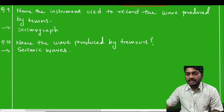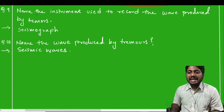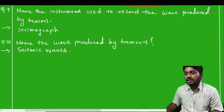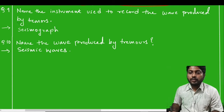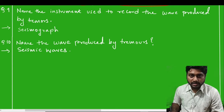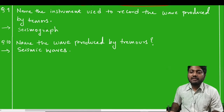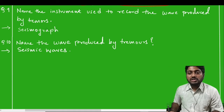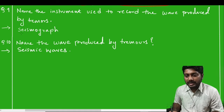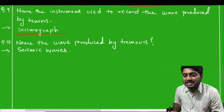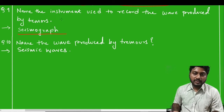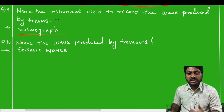Question number nine: name the instrument used to record the waves produced by tremors. Such an instrument is called a seismograph, which detects seismic waves.